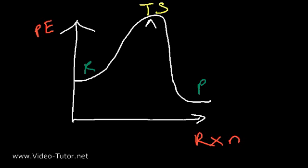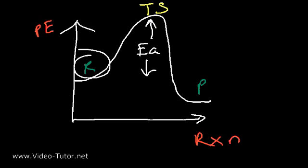Now, in this reaction, notice that the energy of the transition state is very high. To go from the reactants to the transition state, you need to overcome the activation energy, EA. That's the energy barrier.